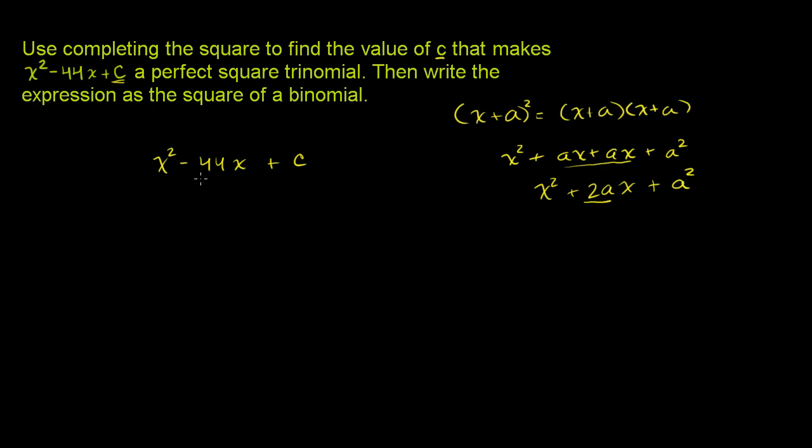So if we look over here, this thing right here is 2a if we want to pattern match, if we want to make this look like a perfect square, that has to be 2a. So -44 = 2a. And this right here, this c, if we pattern match, that has to equal a².